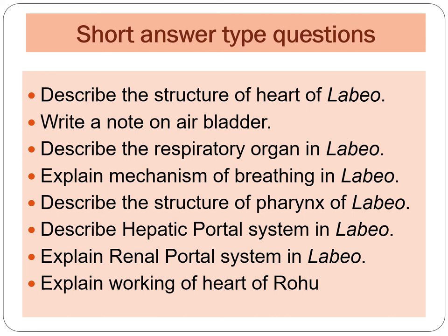Next: describe the structure of the pharynx of Labeo. Next: describe the hepatic portal system in Labeo. Next: explain the renal portal system in Labeo. And the last question of this category is: explain the working of the heart of rohu. As you know, rohu is the common name of Labeo rohita, so the question is related to Labeo rohita only.